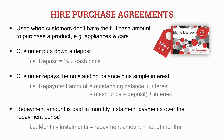Hire purchase agreements are used when customers don't have the full cash amount to purchase a product. This is usually for appliances such as TVs, fridges, washing machines, etc., as well as cars. The customer will put down a deposit, and the formula we use is: deposit equals a percentage times the cash price.